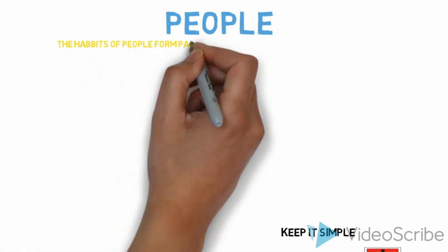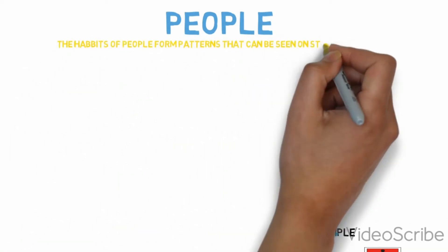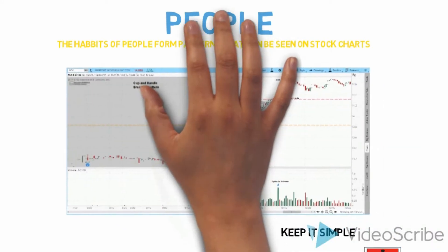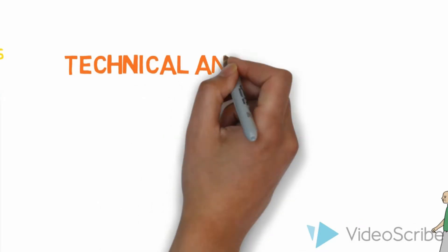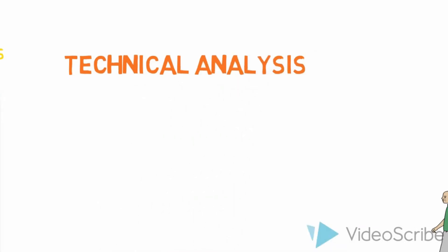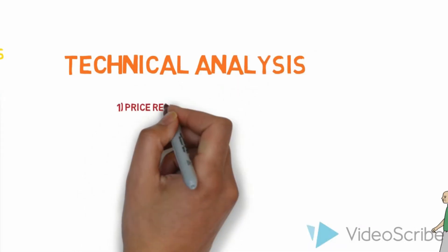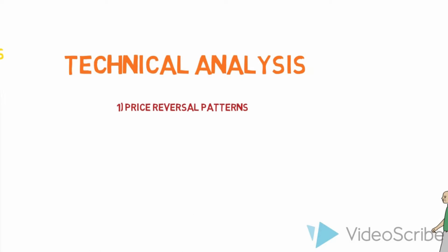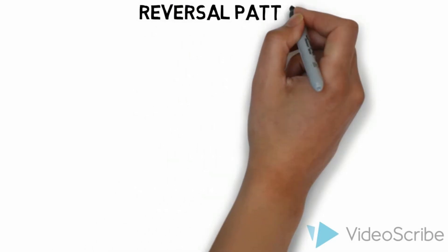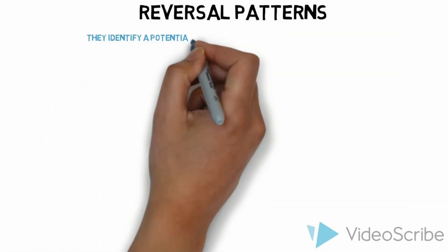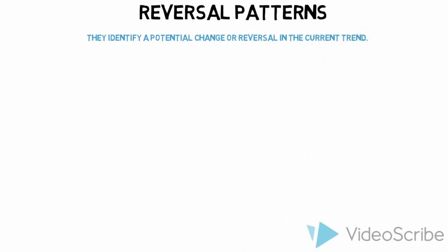The habits of people form patterns that can be seen on a stock chart such as this. The study of these charts is called technical analysis. Now there's two types of patterns: price reversal patterns and price continuation patterns. Today we'll cover the reversal patterns. These patterns identify a potential change or reversal in the current trend.